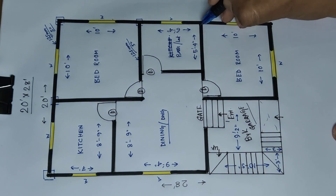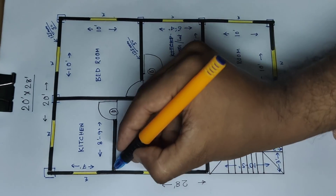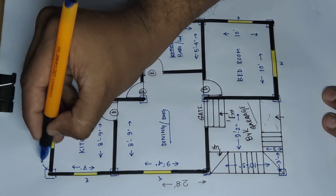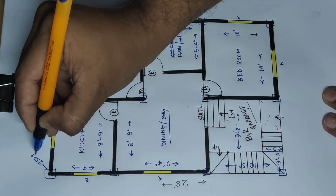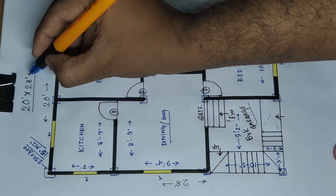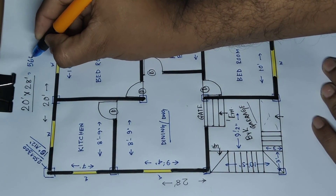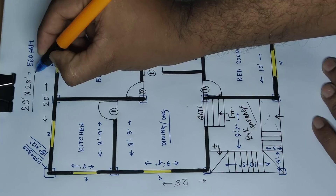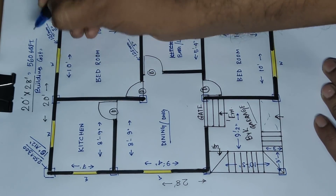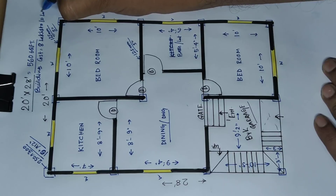Column 1, 2, 3, 4, 5 — this is column. This is column, this is column, this is column — column size 250mm into 300mm, 10 inch into 12 inch. Total square feet: 560 square feet. Construction cost, building cost — total cost 8 lakhs to 10 lakhs.